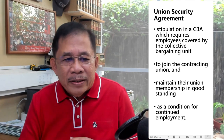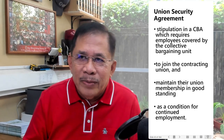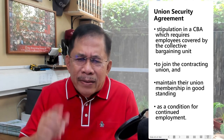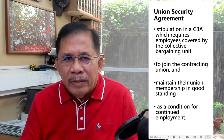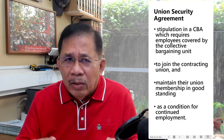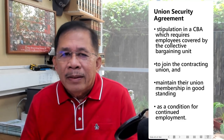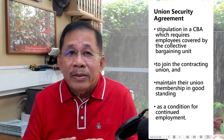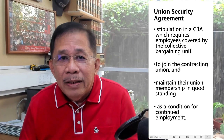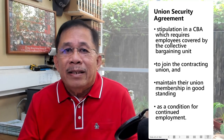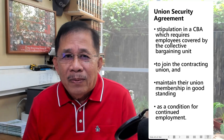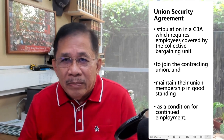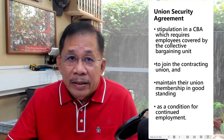Union security is security of the union. Why does the union need to be secured? Because without a union security agreement, the union may die a natural death. That is why all CBAs have a union security provision. If members keep leaving, the union runs out of members and dies a natural death.